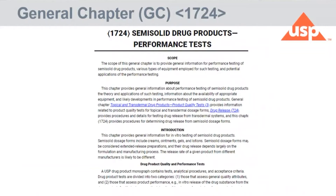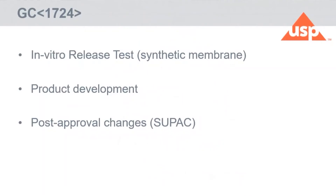In this presentation, Chapter 1724, Semi-Solid Drug Products Performance Test, has been official for several years. This chapter discusses in vitro release testing that uses a synthetic membrane. It gives details on the equipment that can be used, the different types, and discusses how to run the test according to the equipment. It describes how to use this methodology during product development, product assessment, selection of different suppliers for certain excipients, selection of different qualities of different excipients, and so on. It's also where we use it for post-approval changes, as Dr. Shah explained early this morning.